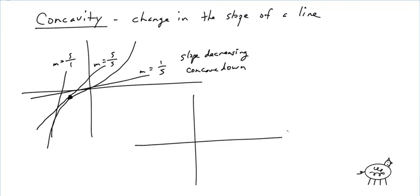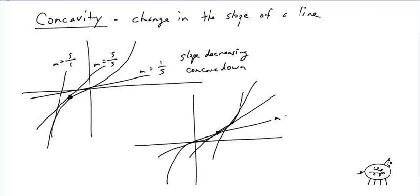Let's do the same picture but look at a couple different slopes here. This slope is up 1 over 5, this one's slope is 5 over 5, and this slope is 5 over 1. As you're going from left to right, the slope is increasing — going from 1 fifth to 1 to 5. So this is called concave up.